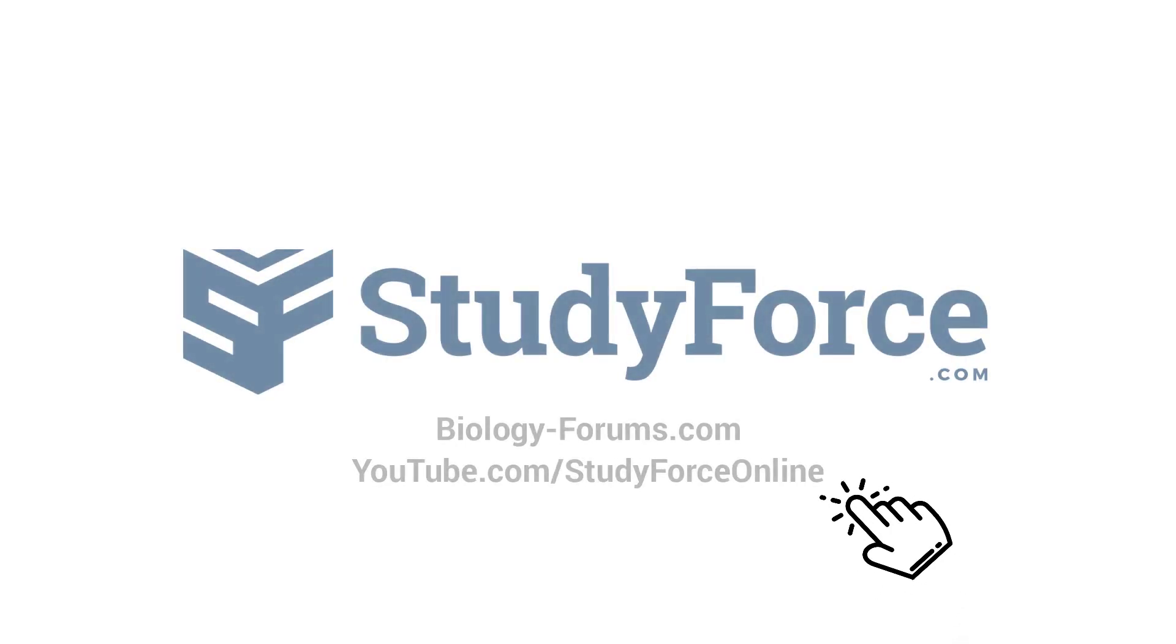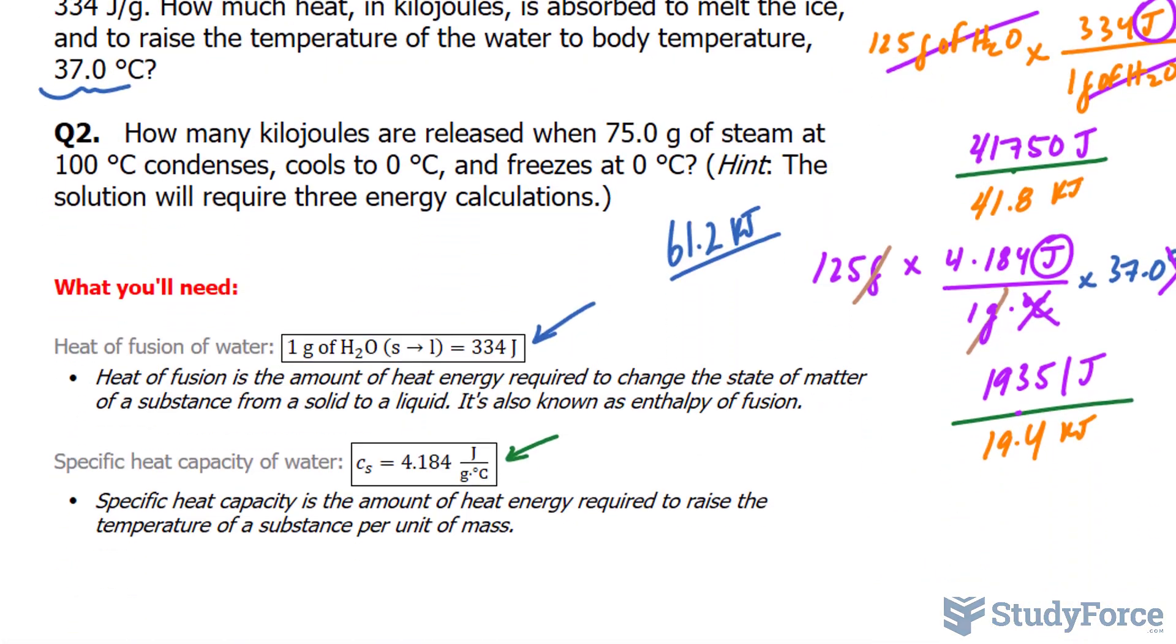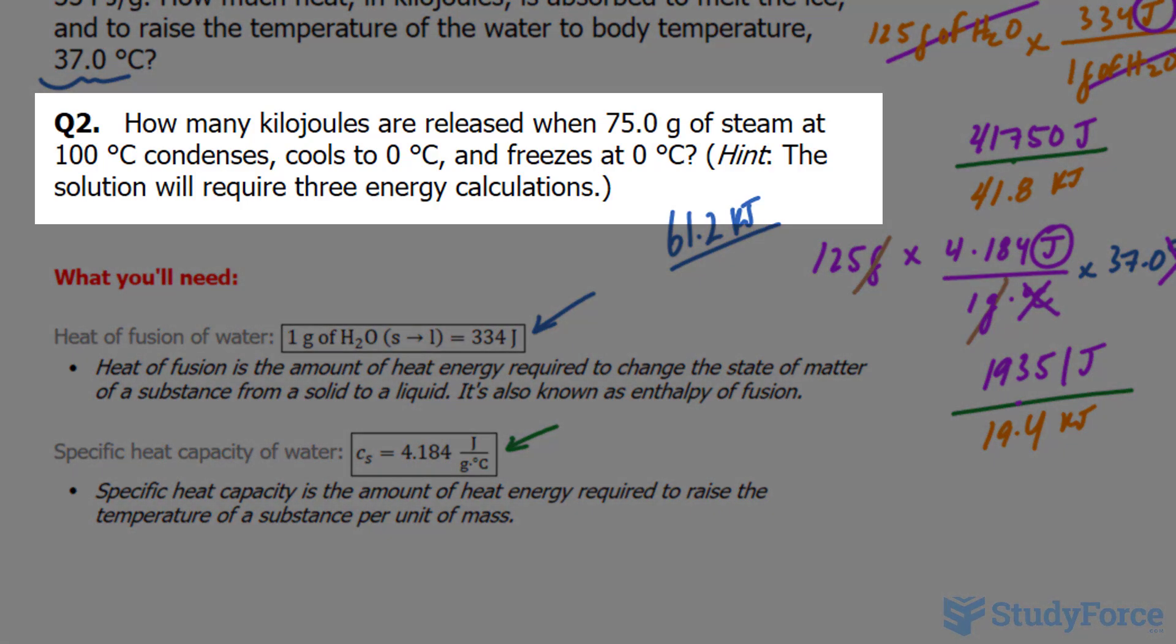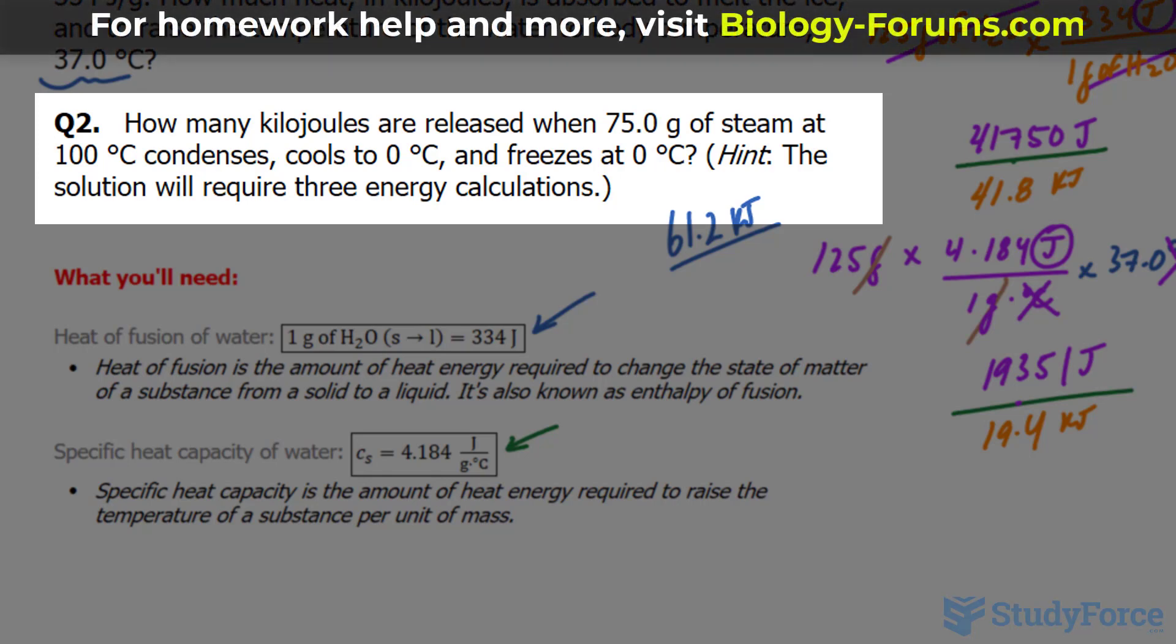Welcome back everyone to question two of this series. We ended off with the following question, which reads: how many kilojoules are released when 75.0 grams of steam at 100 degrees Celsius condenses, cools to zero degrees, and freezes at zero degrees Celsius?